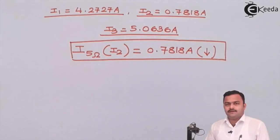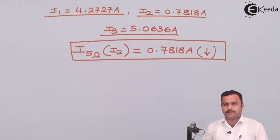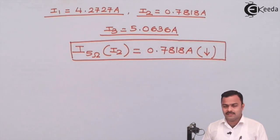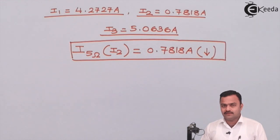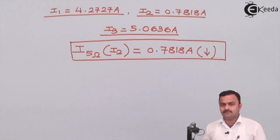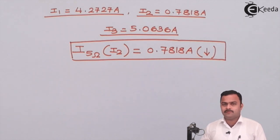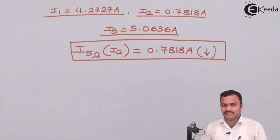Here a simple circuit was considered just to demonstrate how to use KVL in order to find the loop currents using mesh analysis. Basically it is called mesh analysis, but the fundamental law used is Kirchhoff's Voltage Law.